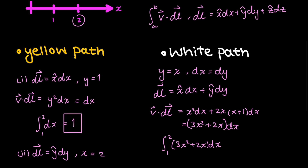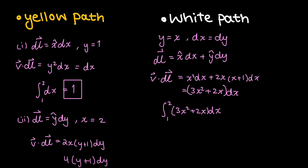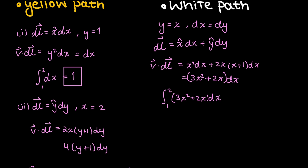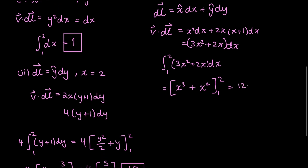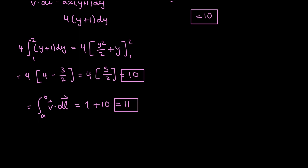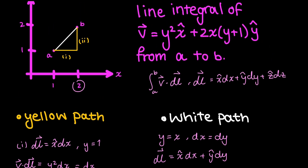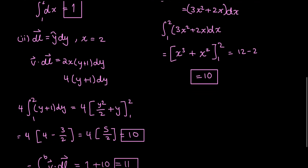This simplifies to (3x² + 2x) dx. Integrating gives x³ + x² evaluated from 1 to 2, which equals 12 minus 2, which equals 10. Comparing these two paths, they have different values — 11 versus 10 — and you should not be surprised by this result. Line integrals are path dependent, and these two paths are different, so getting two different values is expected.